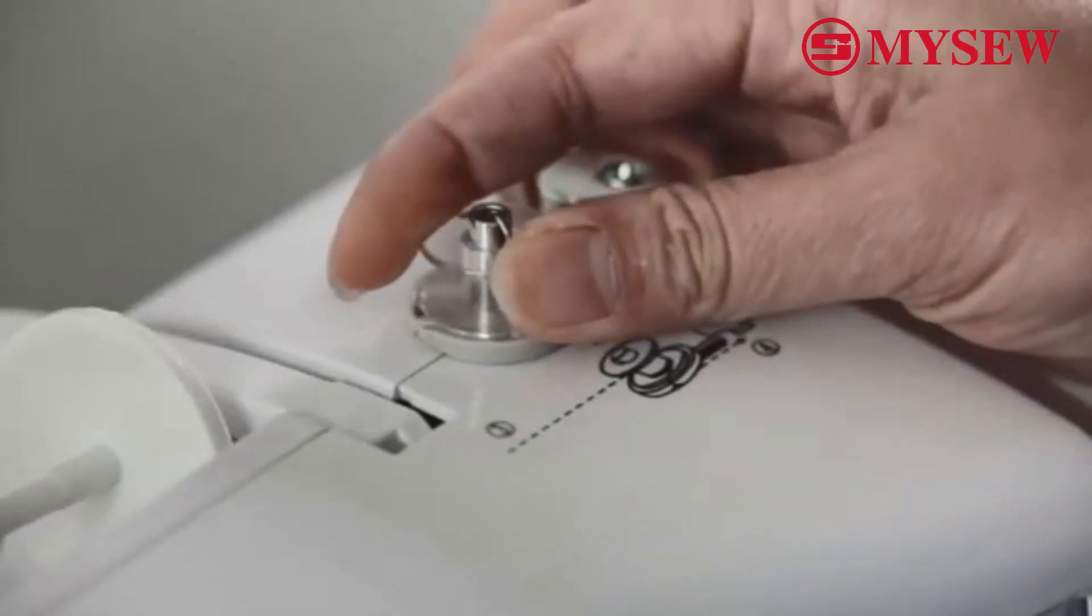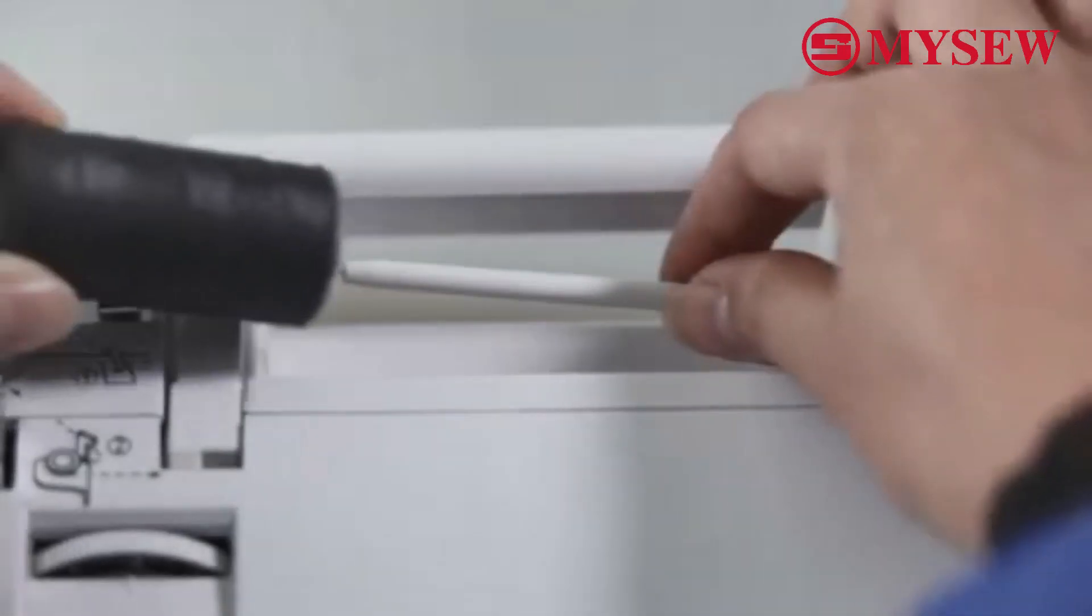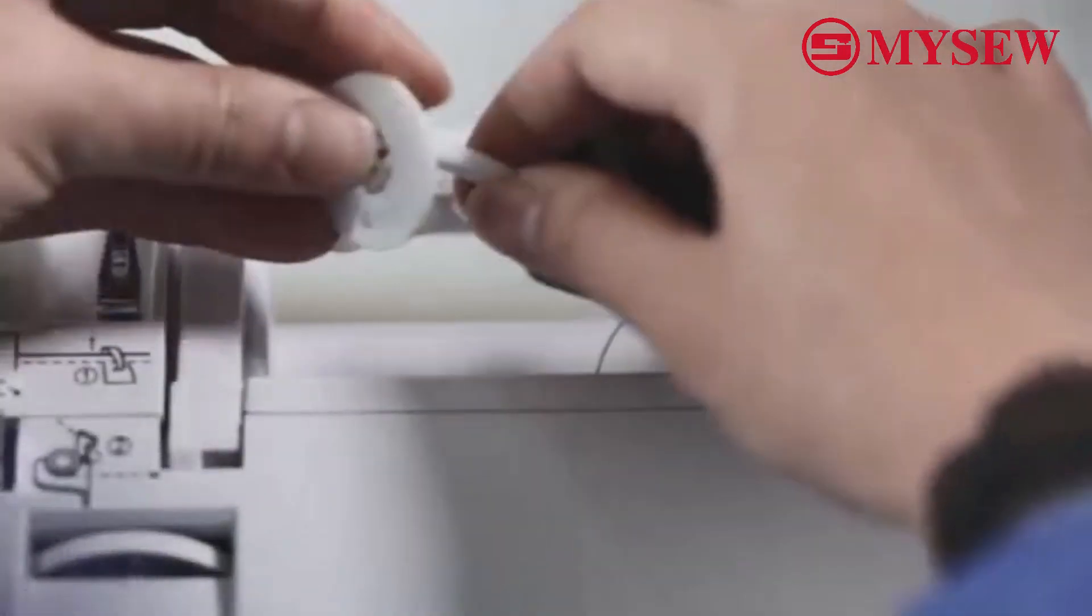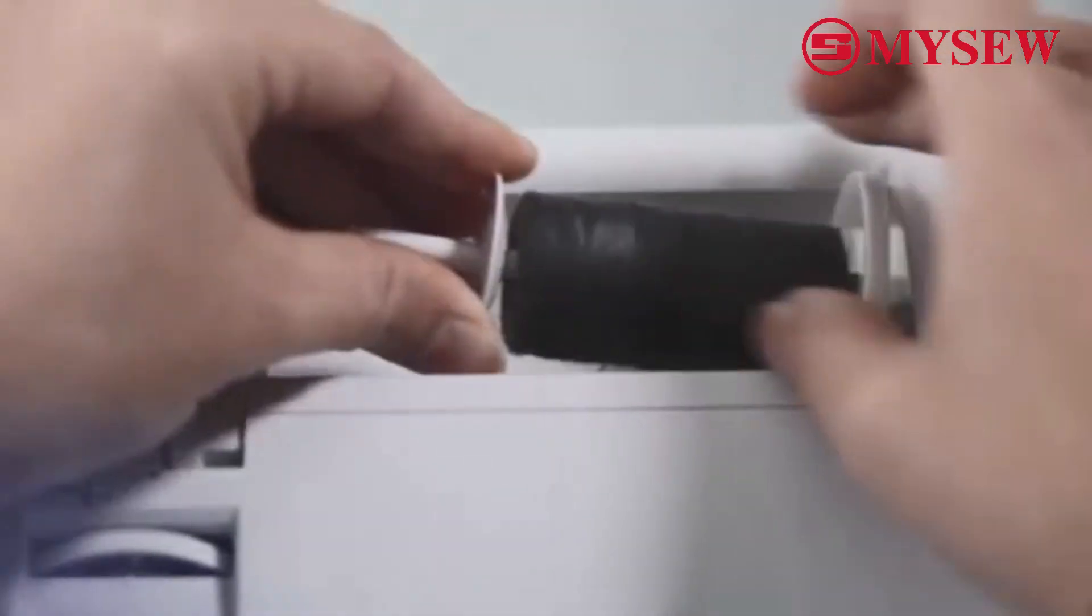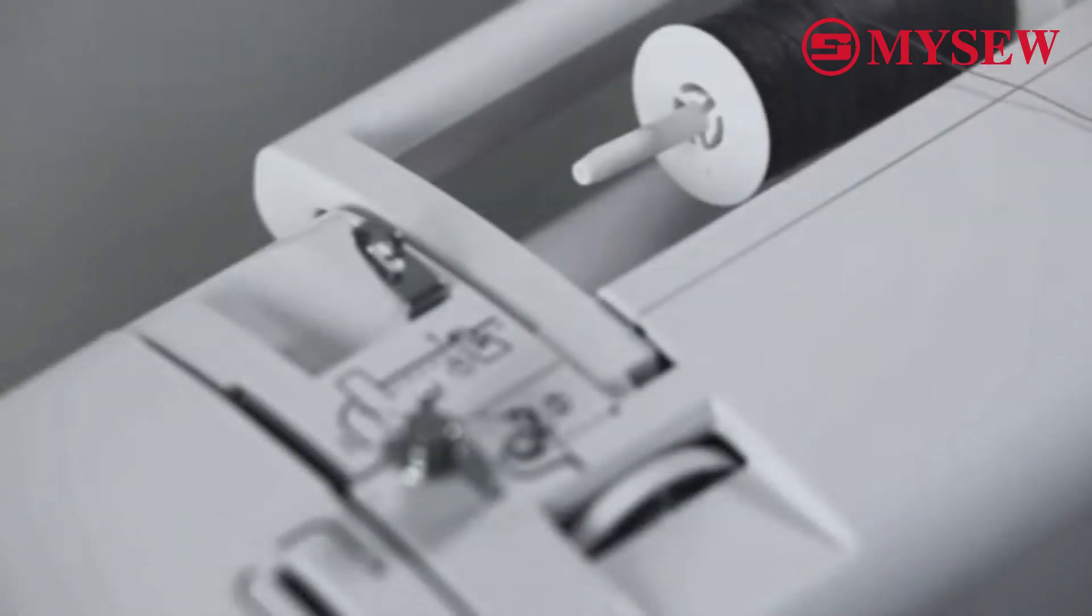Install the bobbin on the fixed shaft. Put the row line on the thread bar and cover it with row line cover. Following the route 1 to 4 to threading.